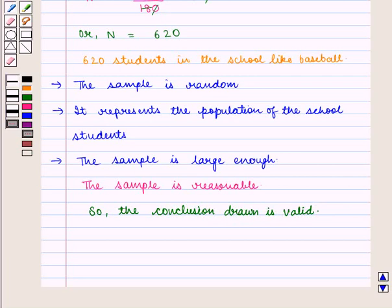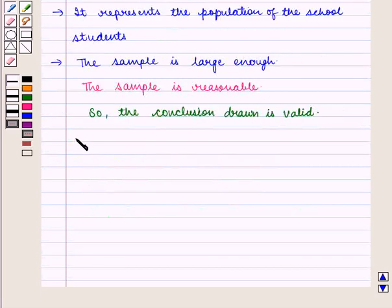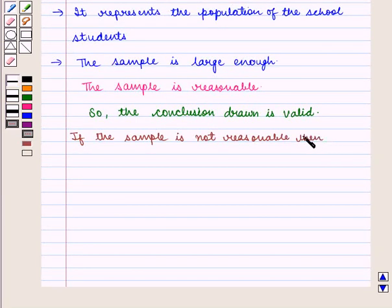And in this way we can draw the inferences about the population from the data of the sample. And we should note that if the sample is not reasonable, then we cannot draw any valid conclusion.